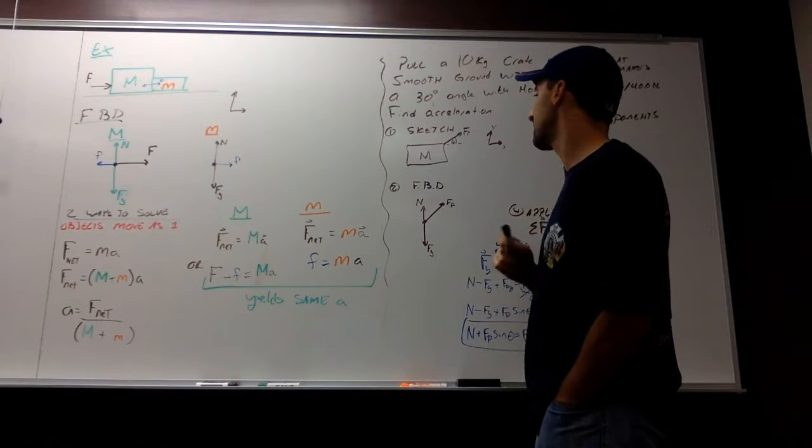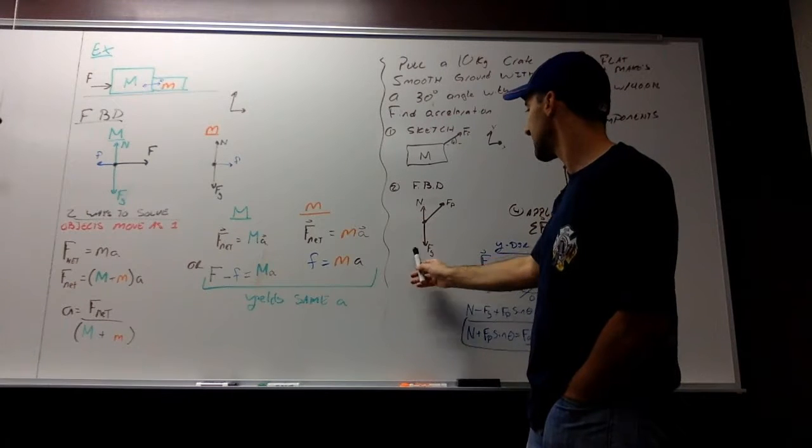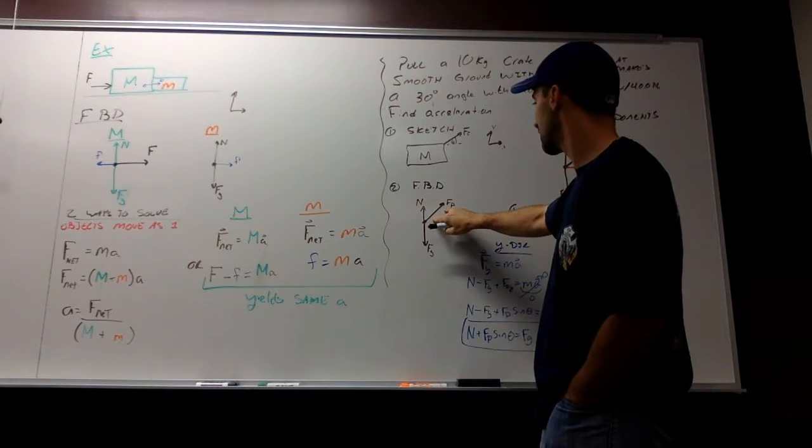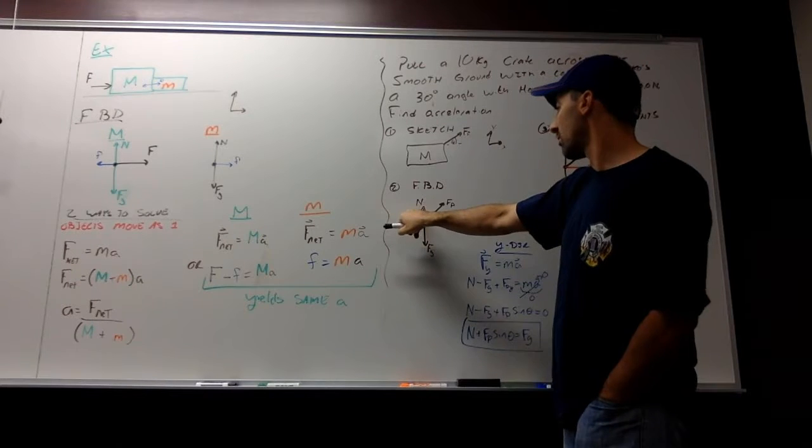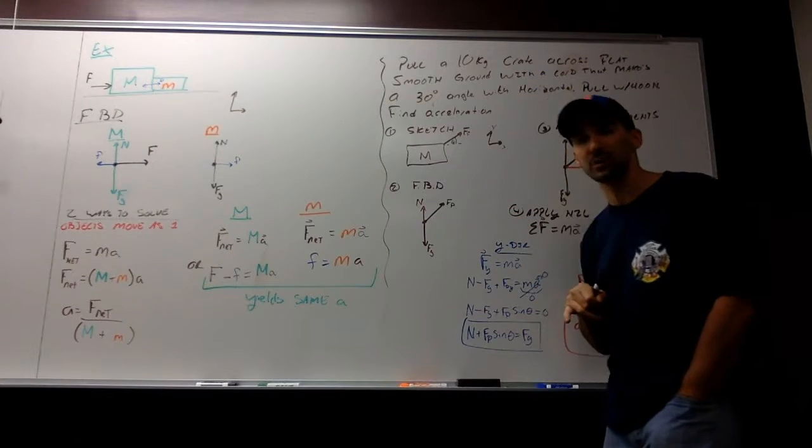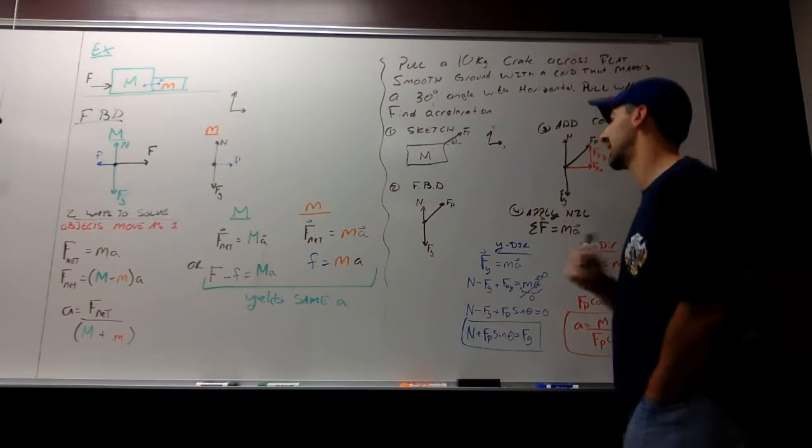Next I draw my free body diagram. I have a normal force, I have the force due to gravity, and I have this pull force. Notice my normal force is smaller than my force due to gravity here, and that should be accurate.